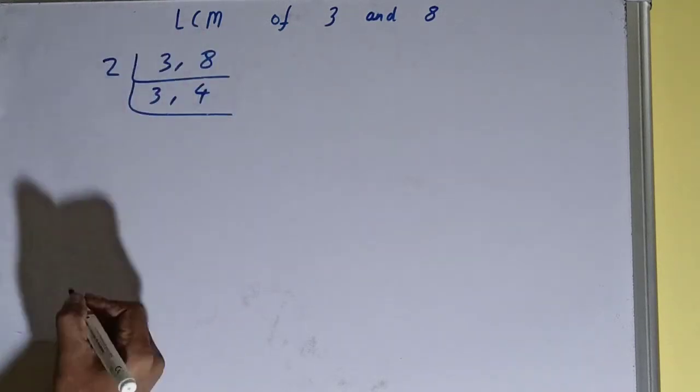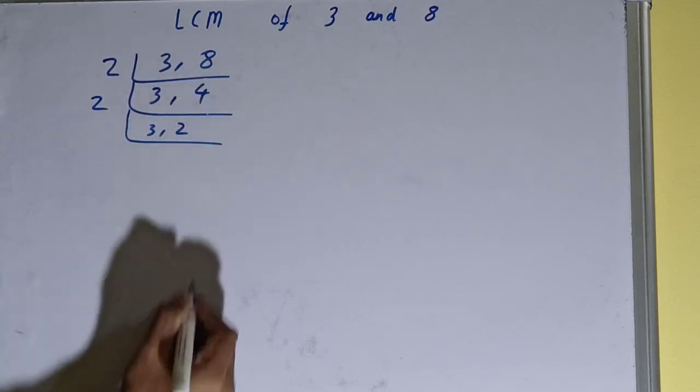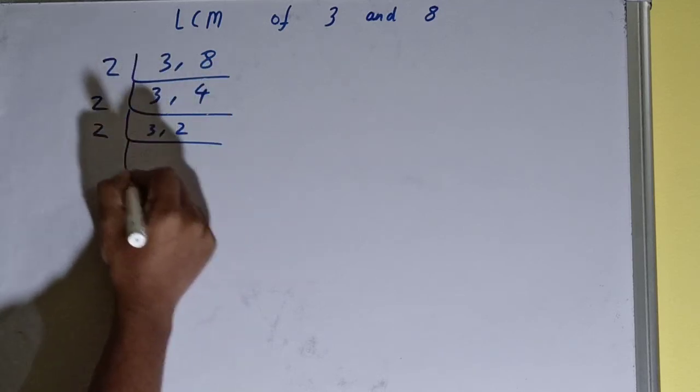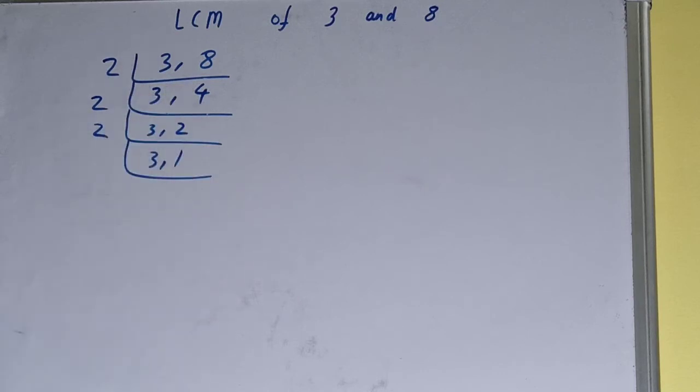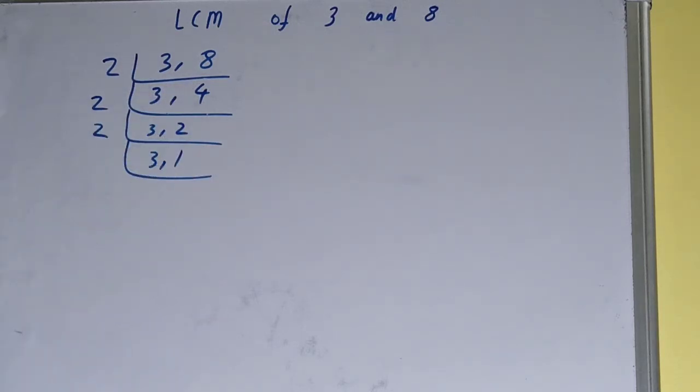This one is divisible, so divide it. We'll be getting 3 comma 2. Again, this 2 is divisible, so divide it. We'll be getting 3 comma 1. Now again, if you check, none of the numbers is divisible by 2, so we'll go to the next lowest prime number, that is 3.